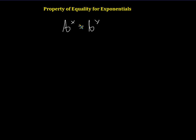it turns out that we can just set the two exponents equal to each other. So if we have a power where we have an exponent of x and another power where we have an exponent of y, then in this case, from the property of equality for exponentials, we can say that x must equal y.